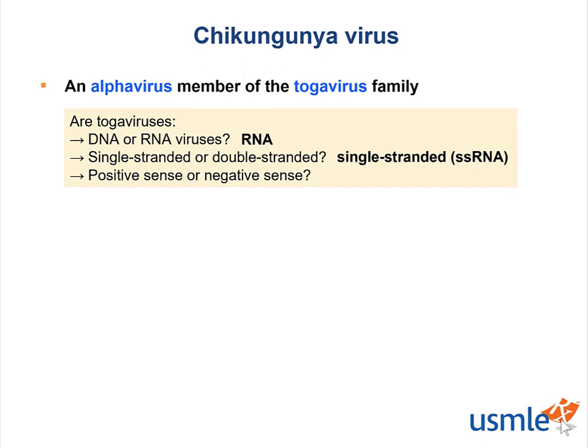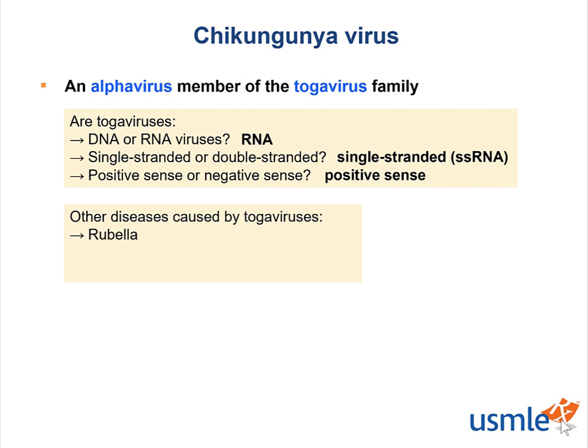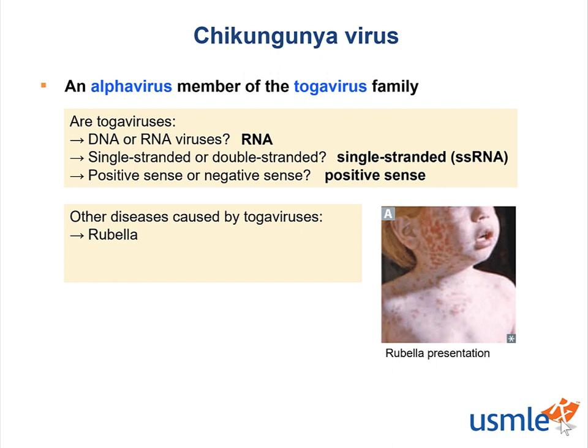Are toga viruses positive sense or negative sense? If you said positive sense, then good job. Now, other diseases caused by toga viruses include rubella — one of our TORCH infections — which presents similarly with fever, joint pain, and rash, but also has postauricular lymphadenopathy, and if congenital, can cause sensorineural deafness, cataracts, and patent ductus arteriosus. Toga virus can also cause eastern equine encephalitis and western equine encephalitis.